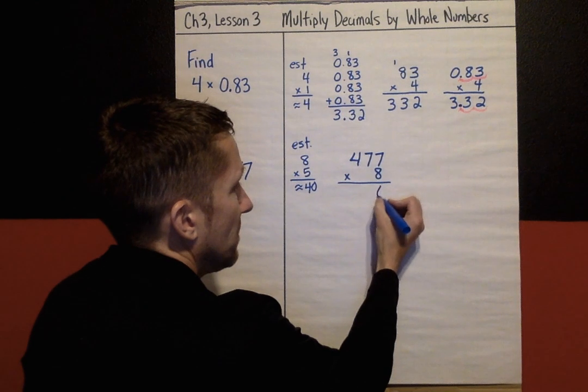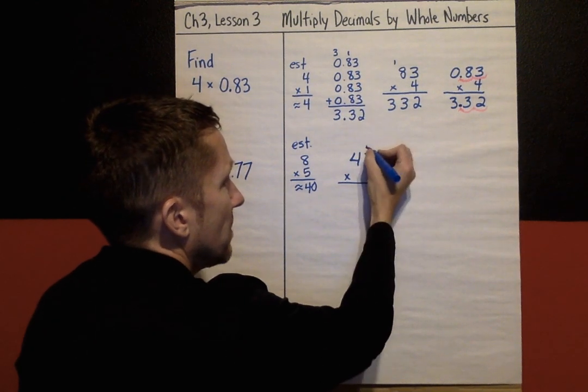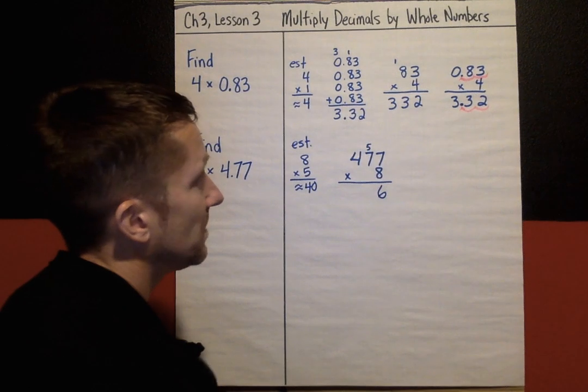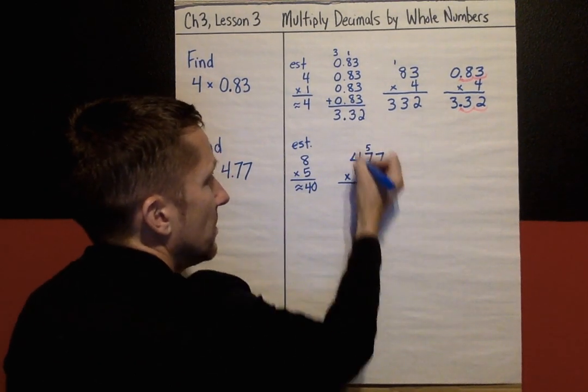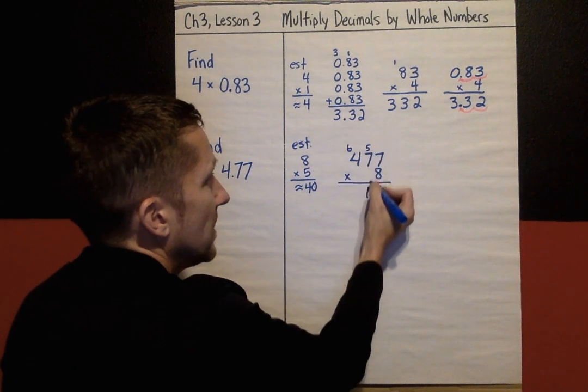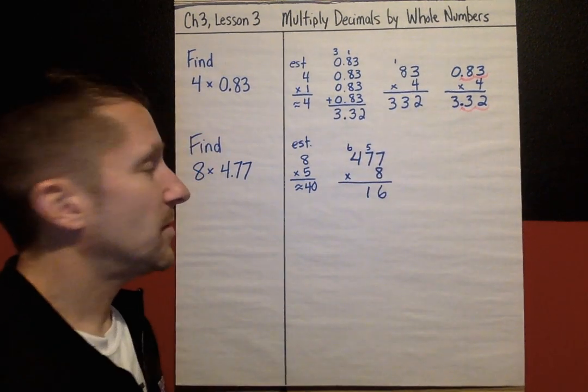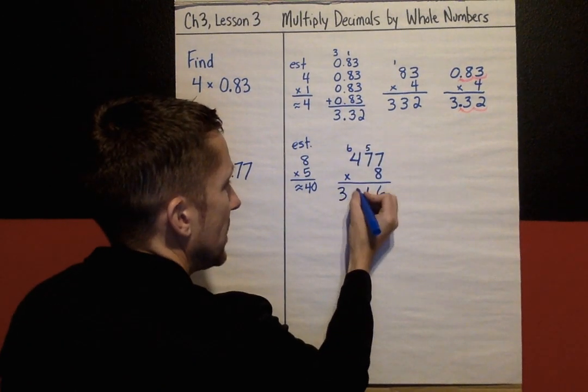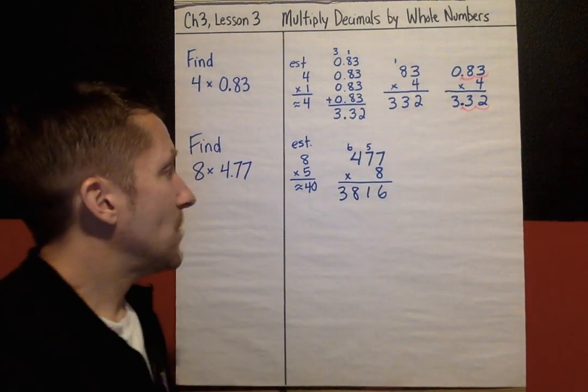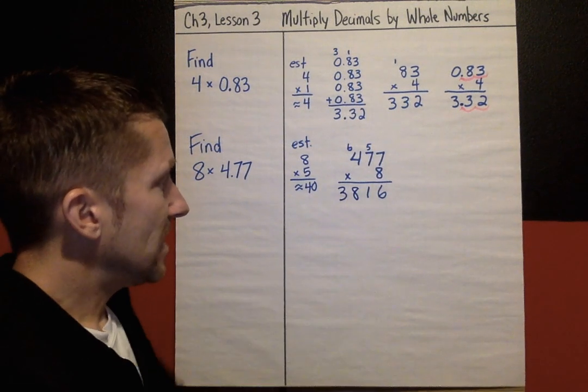8 times 7 is 56, so 6 here, carry the 5. 8 times 7 is 56, plus 5 makes 61. So 1 here, carry the 6. And finally 8 times 4 is 32, plus that 6 makes 38. So my answer is 3816.